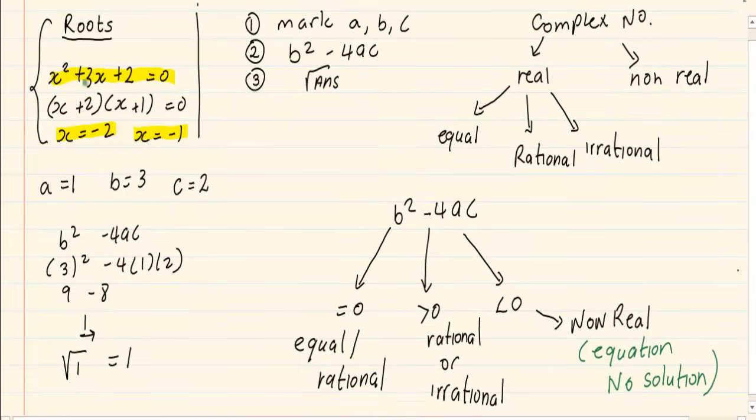Now if you look at the answer that we got, 1 is greater than 0, which means that I can tell you that it is going to be rational or irrational. Now how do I decide if it is rational or irrational? If when you rooted the answer and it was a perfect square, then it will be rational. But if it is not a perfect square, then it will be irrational.